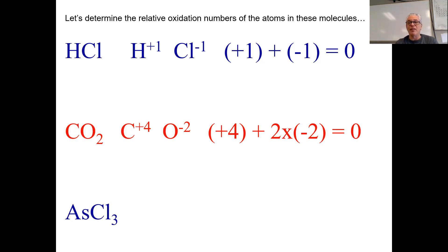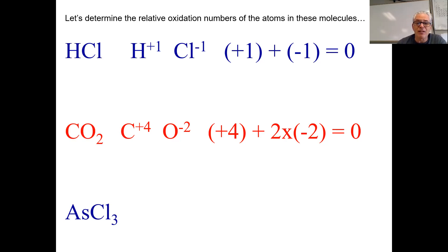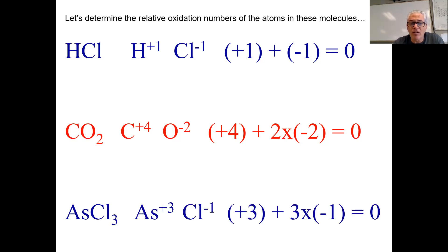In CO2, the carbon is positive four and the oxygens are both negative two. Arsenic trichloride — arsenic is element 33. Chlorine has a negative one oxidation number, and arsenic can be a positive three. So if arsenic is positive three and the chlorines are each negative one, one positive three and three negative ones sums to zero.